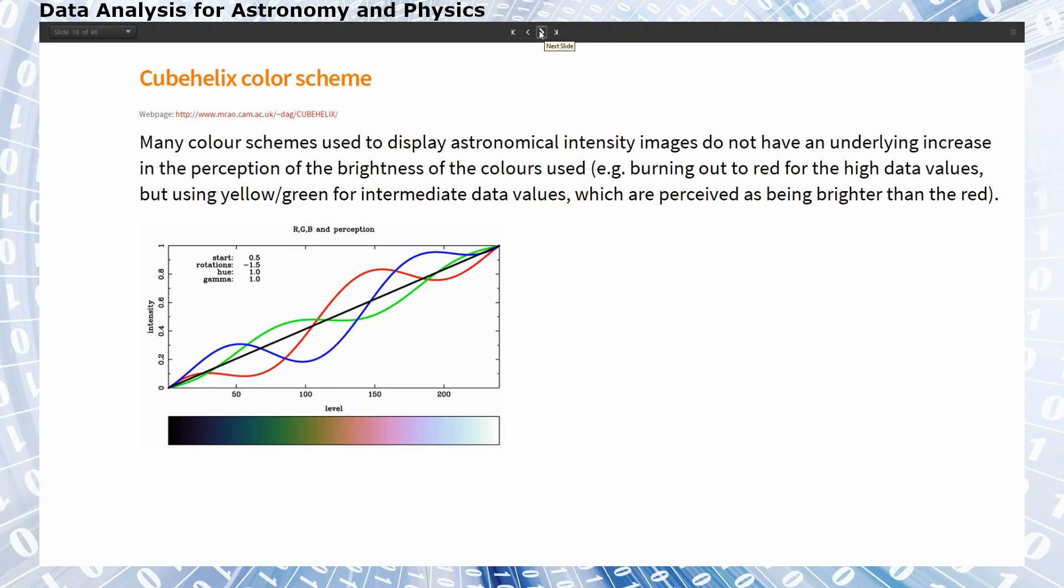For this reason, people invented new color scales such that some of the disadvantages that I explained to you are less prominent. For example, the cube helix color scheme.